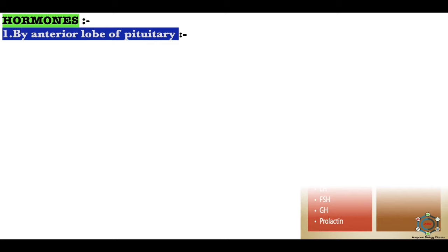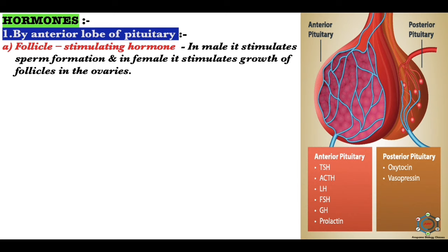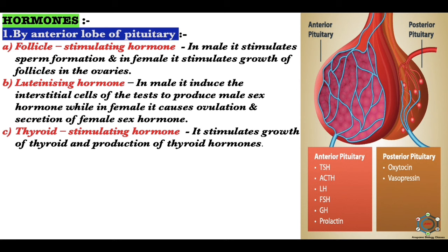The hormones of the anterior lobe of the pituitary include: follicle-stimulating hormone (FSH), which in males stimulates sperm formation and in females stimulates growth of follicles in the ovaries; luteinizing hormone (LH), which in males induces interstitial cells of the testes to produce male sex hormones, while in females causes ovulation and secretion of estrogen from maturing ovarian follicles and progesterone by the corpus luteum formed in the empty ovarian follicle.